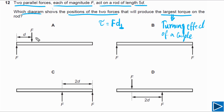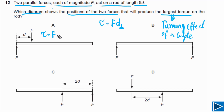For option A, the two forces form a couple: they have the same magnitude, act in different directions, and are not acting along the same line. The torque in this case is simply equal to F times d, the perpendicular distance between the forces.